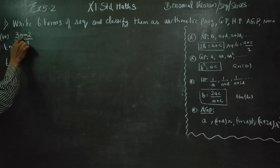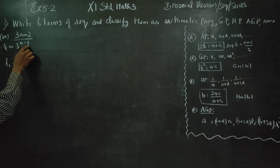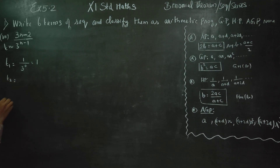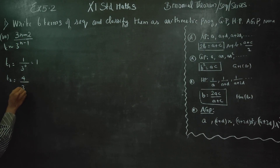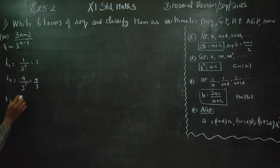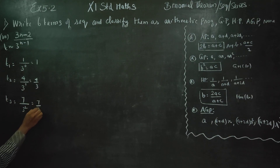For T1: substitute n=1. We get (3×1 - 2) / 3^(1-1) = 1/3^0 = 1. So T1 = 1. For T2: (3×2 - 2) / 3^(2-1) = 4/3. For T3: (3×3 - 2) / 3^(3-1) = 7/3² = 7/9.